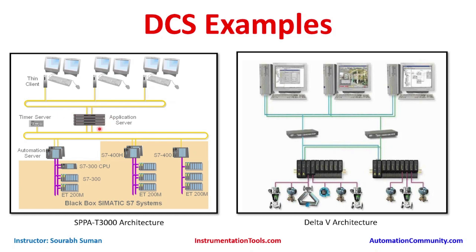The application server sits in between and has multiple NIC ports. The hardware could be an HP DL360, Dell, or Fujitsu server. Windows Server is installed on this hardware, and on top of Windows Server the application software SPPA-T3000 runs. It receives data from both the automation highway and the application network. On the application network, multiple thin clients sit and log into the application server to access the workbench.